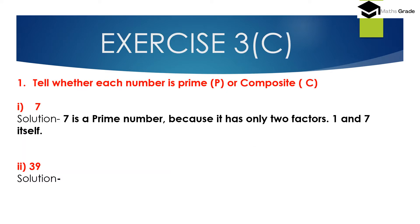We will now solve question number 1: tell whether each number is prime or composite. First, 7. Seven is a prime number because it has only two factors: 1 and 7. There are no other numbers which when multiplied together give 7, so 7 has only 2 factors and is a prime number.